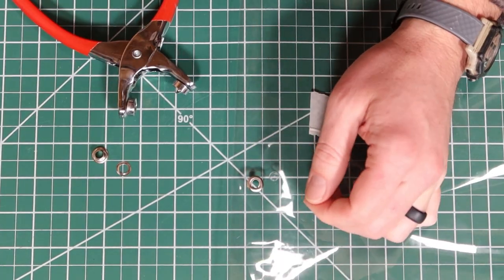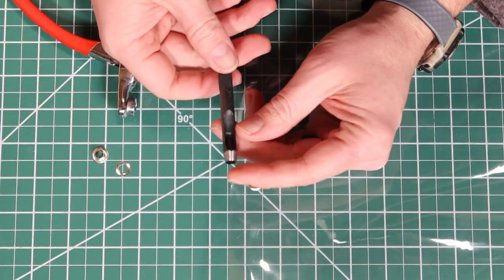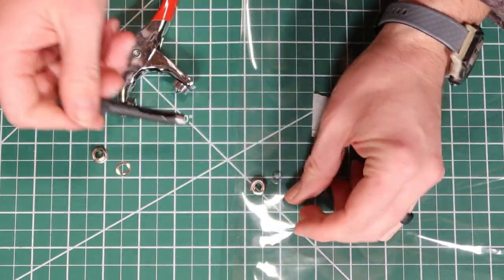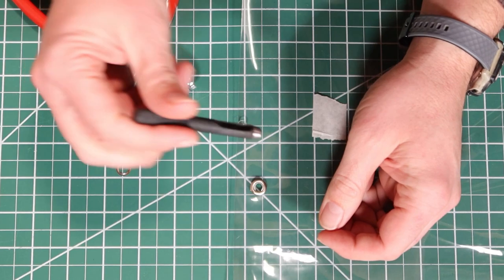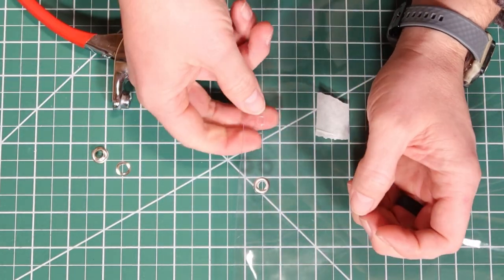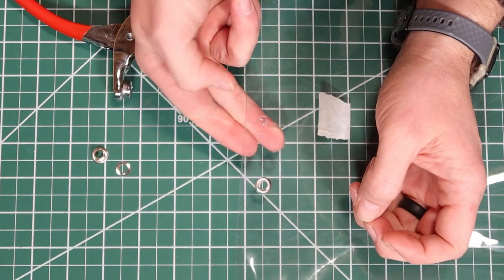You've got this leather punch here where you just put that on the surface, tap it with a hammer, and it should put your hole in where you need it. So just push a little bit. I think it's going to be sharp enough to make a difference there.